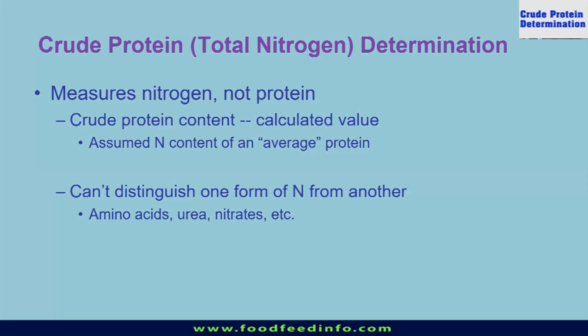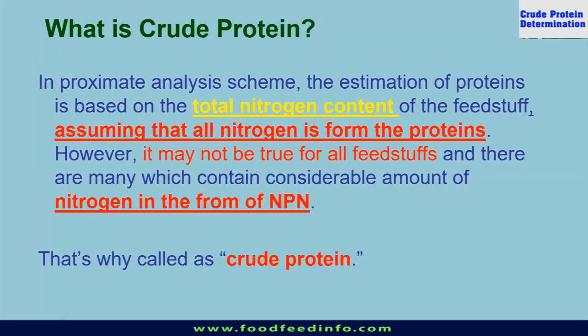This nitrogen may come from amino acids, or it may come from urea, nitrates, or other NPN compounds. This technique only tells us about the nitrogen content, and we are not aware of the nitrogen source. In the proximate analysis scheme, the estimation of protein is based on total nitrogen content of the feedstuff, and we assume that all nitrogen is in the form of protein. However, it may not be true for all feedstuffs because many contain a considerable amount of nitrogen in the form of NPN compounds. That's why this is known as crude protein.